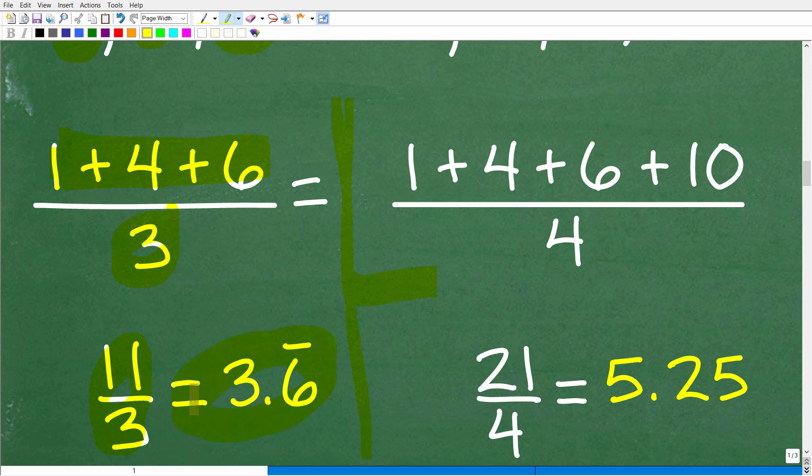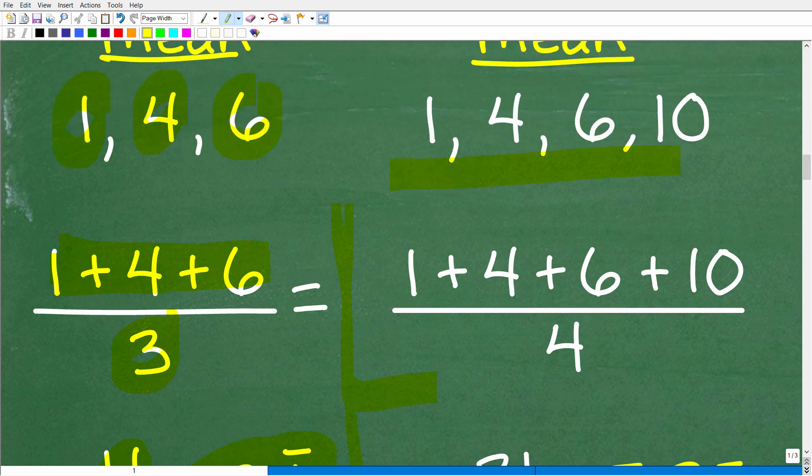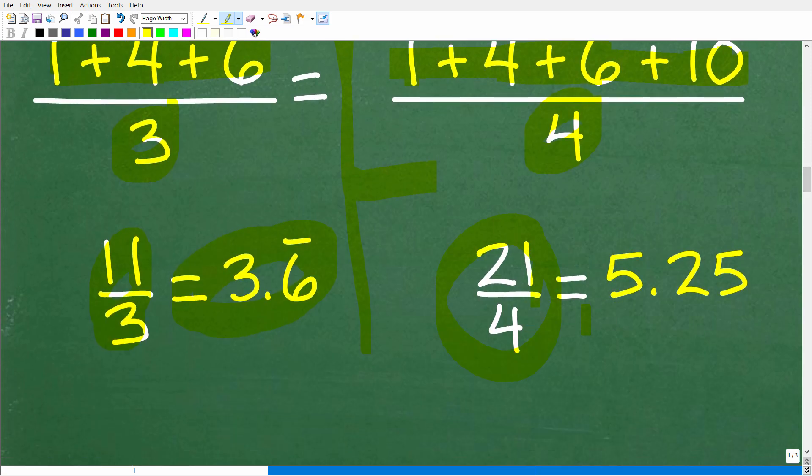Alright. So that is the mean there for that particular problem. And then for this problem right here, we have 1, 4, 6, and 10. So same process, right? We're going to add up these numbers. So 4 and 6 is 10 plus 10. That, of course, is 20. And then we have 20 plus 1 is 21 divided by 4 because there's four numbers. Alright. So we have 21 divided by 4. And when we do this lovely math, we get 5.25.